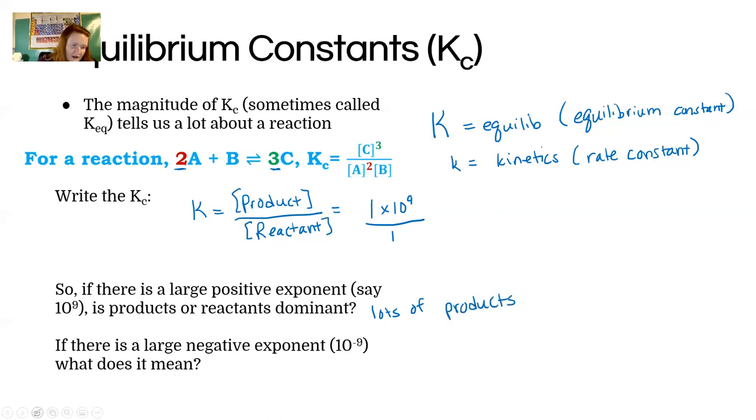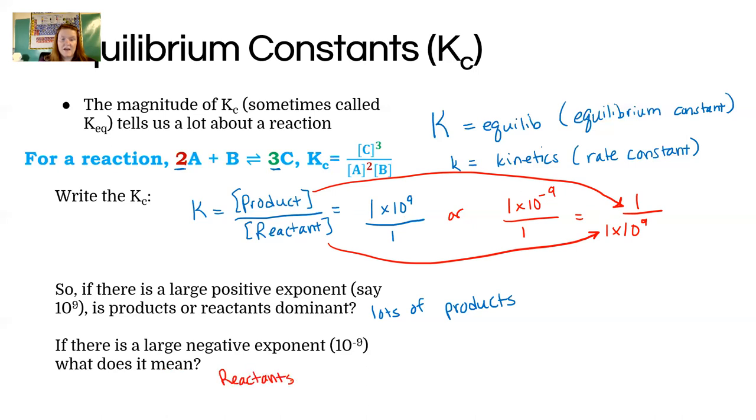If, on the other hand, we have, say, 10 to the negative 9, the negative exponent can confuse people. So I just want to remind you that that's the same thing as an inverting situation here. So in this case, product is little, reactant is big. So we would say we would have to say that the reactants are dominant if we have like a negative exponent.